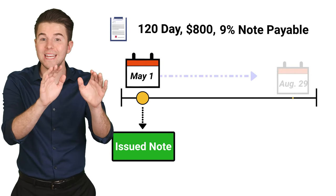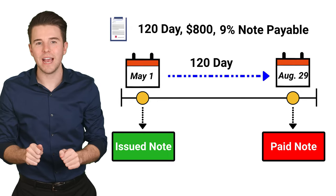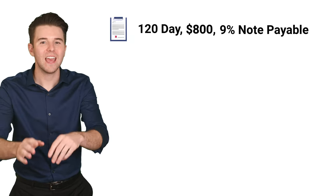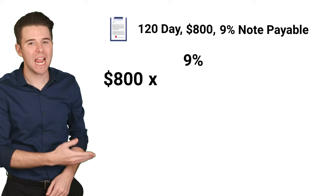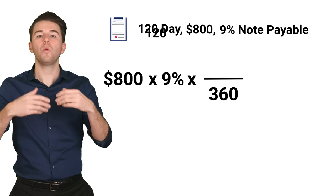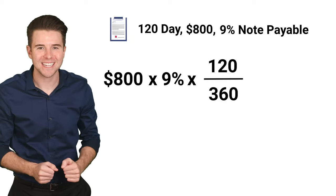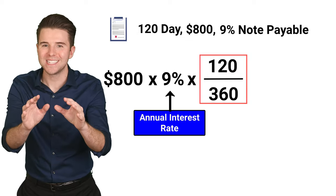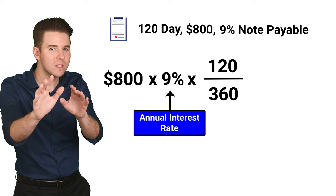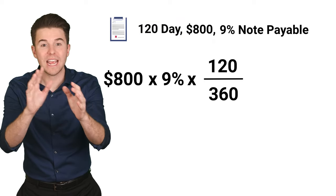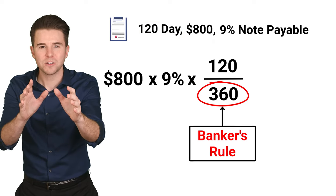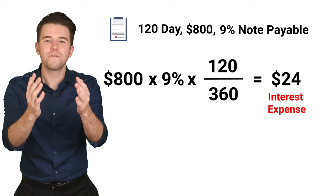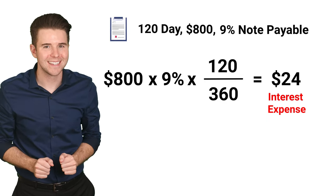On August 29th, when the note is due, we pay back the $800 plus interest. To compute interest expense, we take the $800, multiply it by 9% and multiply that by 120 over 360 days. We include the 120 over 360 days because the 9% rate is an annual rate, but the note is only for 120 days. We use a 360-day year called the Banker's Rule because it makes for easier calculations. This gets us $24 of interest expense.